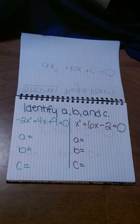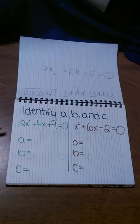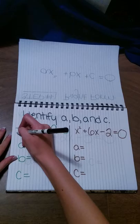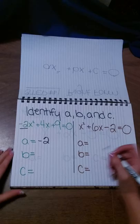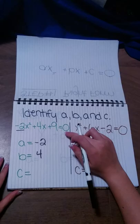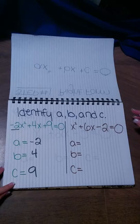Here are some examples where we're going to identify a, b, and c in both equations. Starting with the one on the left: a will always be in front of the x squared, so that would be negative two. Then b will always be in front of just the regular x, not the x squared, so our b would be four. And c doesn't have any x's with it — it's just a number, so c would be nine.